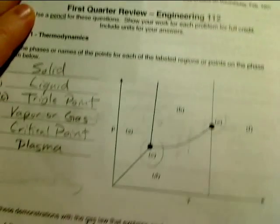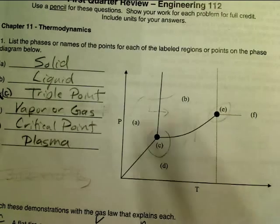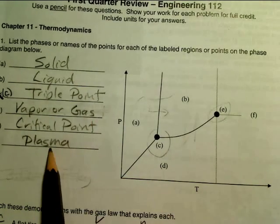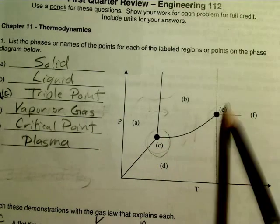This is what we did in class so far. We identify the different regions of the phase diagram: solid, liquid, vapor or gas and plasma, and the triple point and critical point.